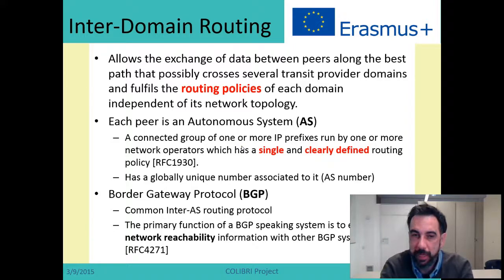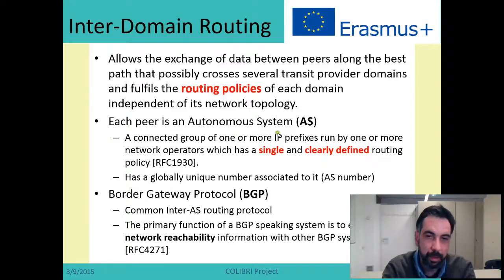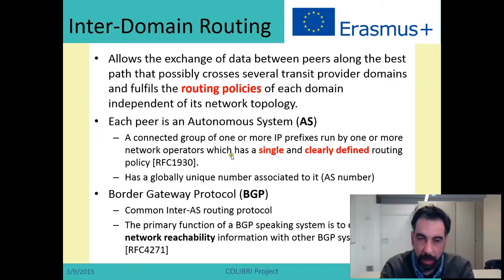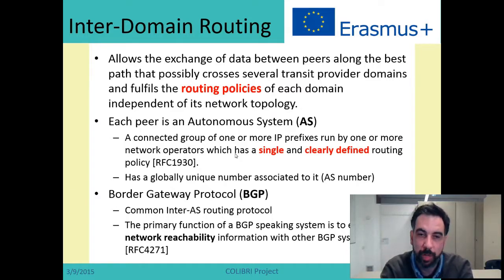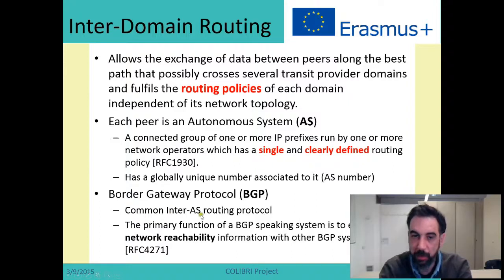We have to define what a domain is. A typical domain is called an autonomous system. An autonomous system is a network typically managed by one single entity — an ISP, a national research network, or a large company. They have a set of IP prefixes. For instance, a company may have one IP prefix which identifies the nodes connected to that autonomous system. The main role of BGP is to provide routing between autonomous systems, which is what inter-domain routing means.